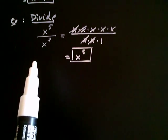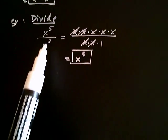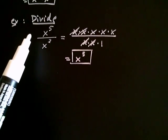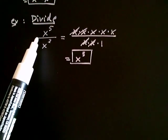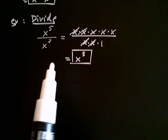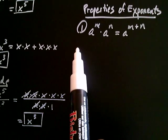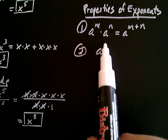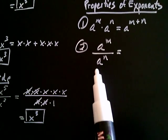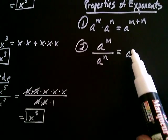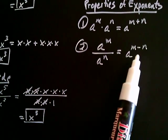Looking at x to the fifth divided by x squared giving x to the third — what would you do with the exponents? You would subtract. Five take away two gives the exponent of three. Whenever you divide exponential expressions with the same base, you subtract the exponents. Our second property: a to the m divided by a to the n equals a to the m minus n. The first property was addition of exponents, and the second property is subtraction of exponents.